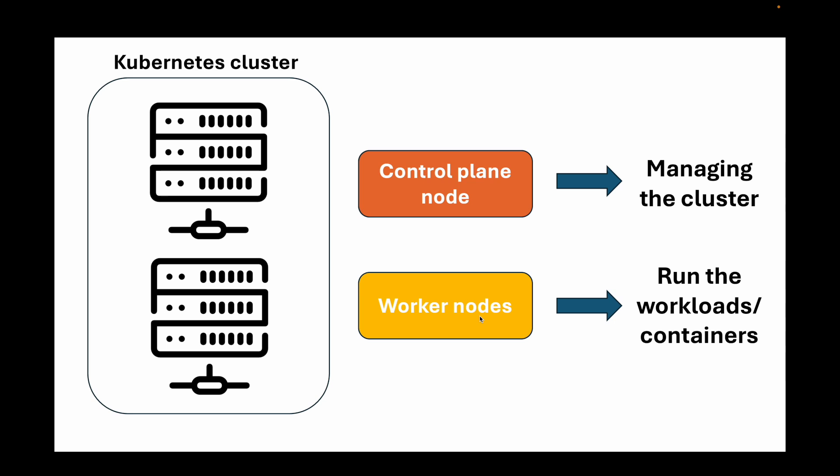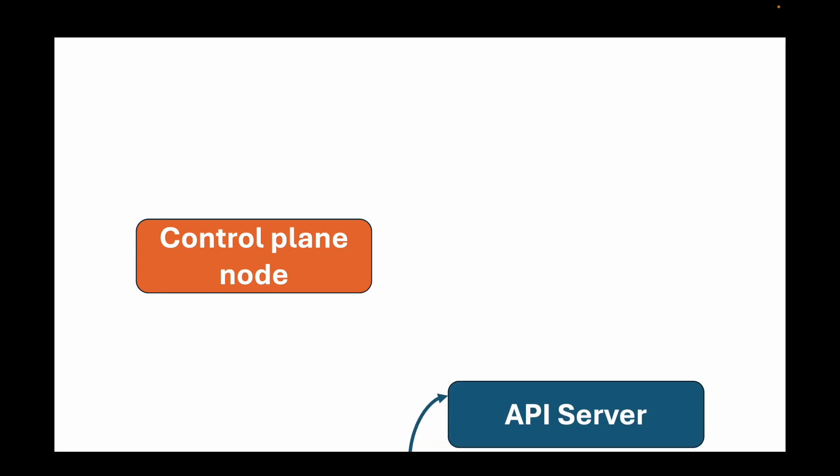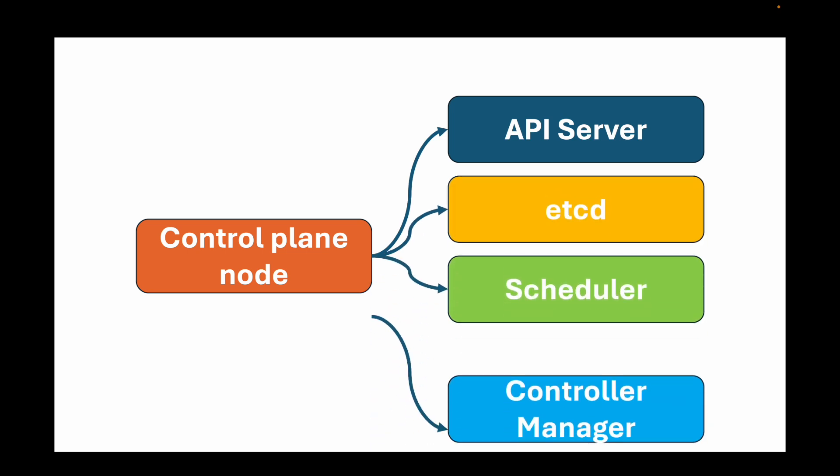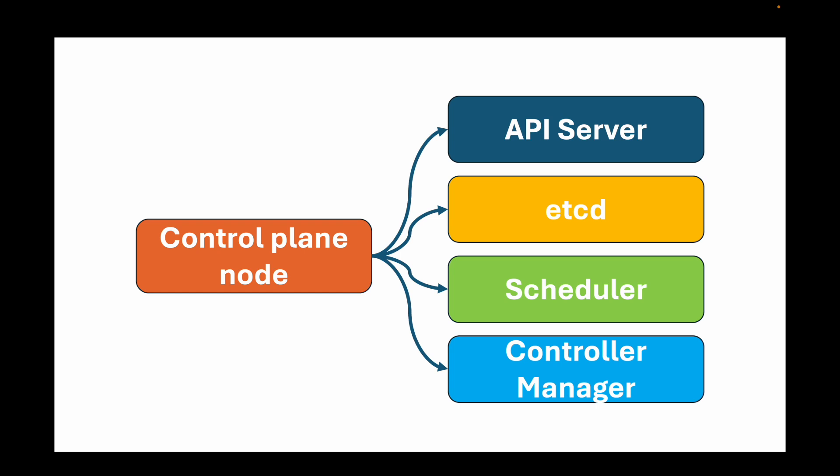Let's break this down further and talk about the control plane. Within the control plane node, we have four main components: the API server, etcd, the scheduler, and the controller manager. All these components help you manage your cluster, control the placement of your pods, resources, and everything else. The control plane is the main component of your cluster and is what helps you manage the cluster itself.